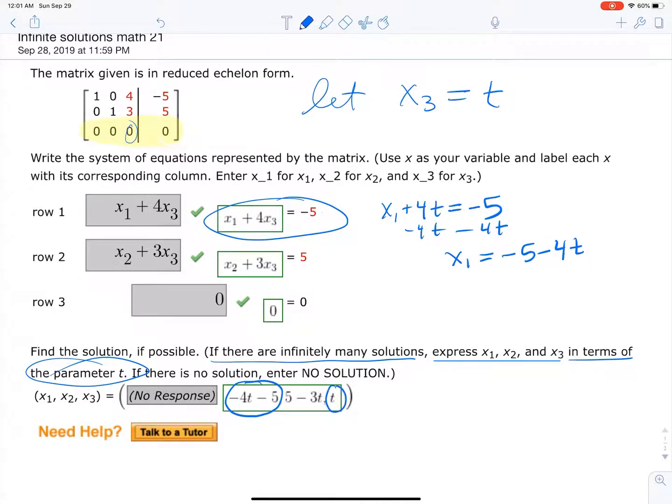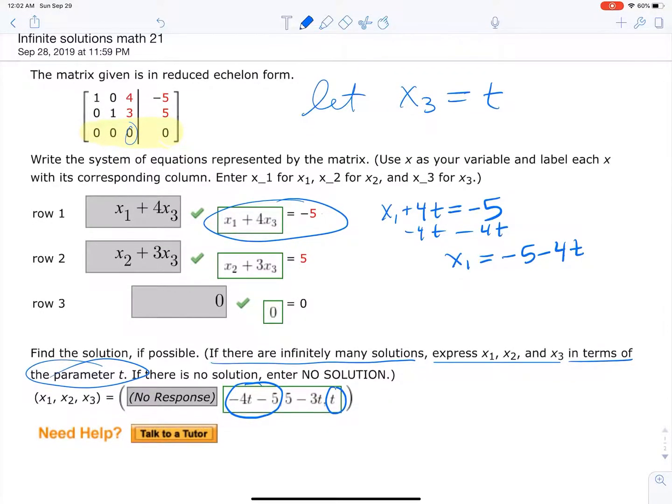And notice that that's here. See how we got that? And now x3, that's t because we let x3 equal t.